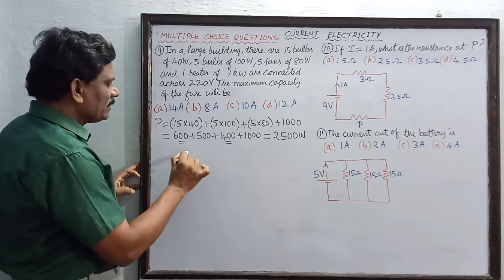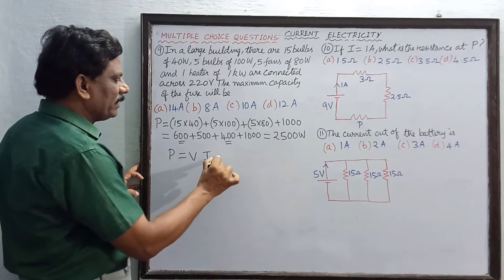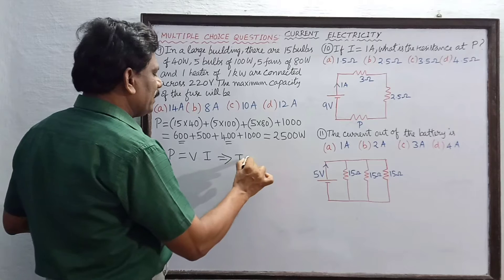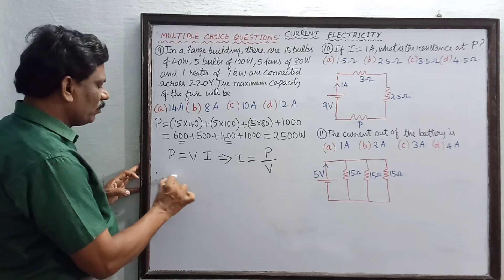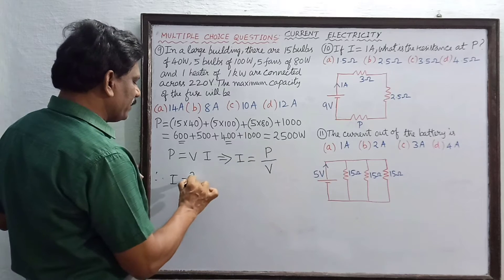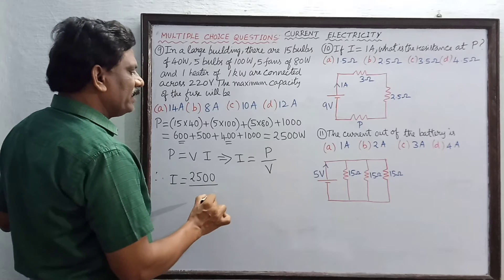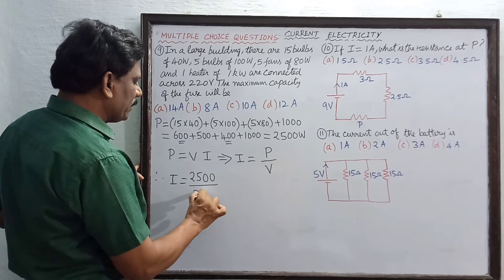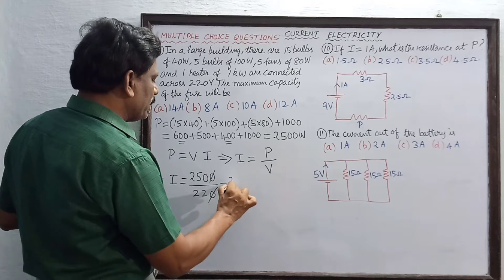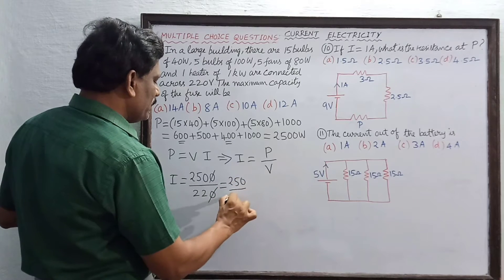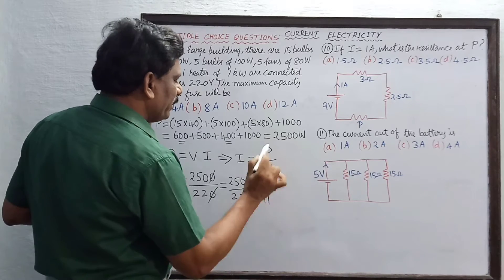Power P is equal to voltage multiplied by current. This implies current I is equal to power divided by voltage. Therefore, current equals 2500 divided by 220, which simplifies to 250 divided by 22, and further to 125 divided by 11.